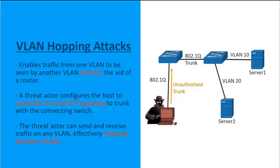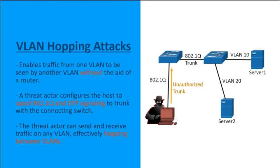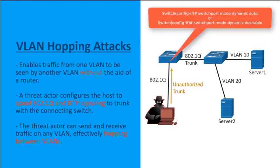A VLAN hopping attack enables traffic from one virtual local area network to be seen by another without the aid of a device such as a router. In a basic VLAN hopping attack, a threat actor configures a host to act just like a switch, then takes advantage of the automatic trunking port feature that's enabled by default on most switch ports, using modes like dynamic auto or dynamic desirable.